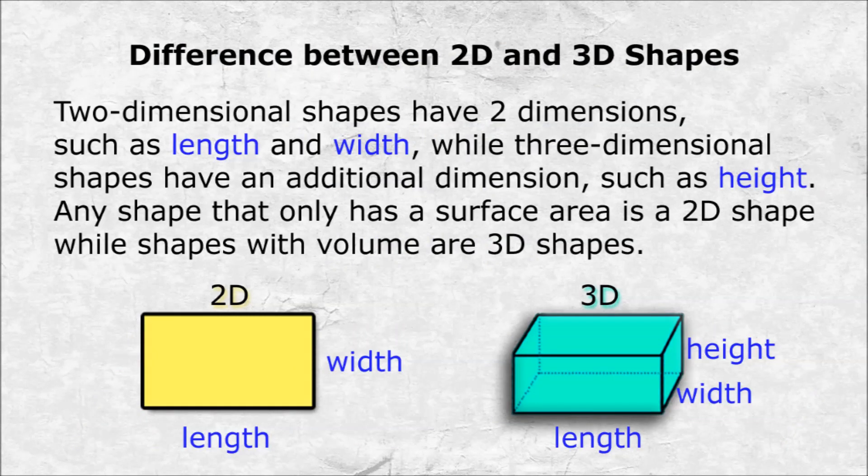Difference between two-dimensional and three-dimensional shapes. Two-dimensional shapes have two dimensions, such as length and width, while three-dimensional shapes have an additional dimension, such as height. Any shape that only has a surface area is a two-dimensional shape, while shapes with volume are three-dimensional shapes.